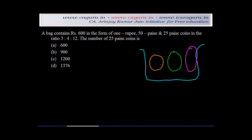You are told that these 3 buckets basically have 1 rupee coin. 1 rupee is basically equal to 100 paise. You have 50 paise coin and you have 25 paise coin. And the ratio of these coins is given as 3 is to 4 is to 12.